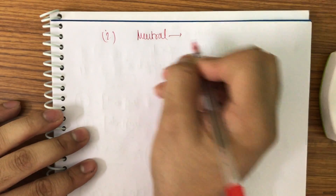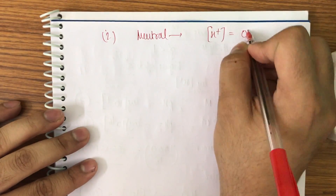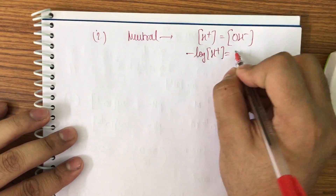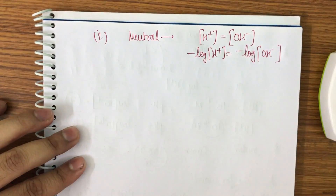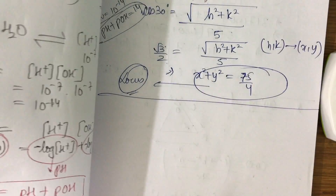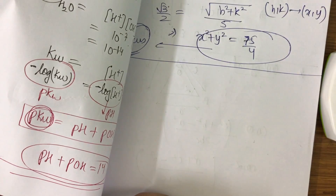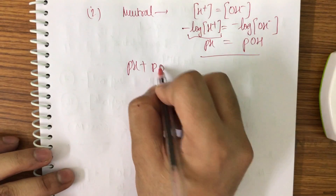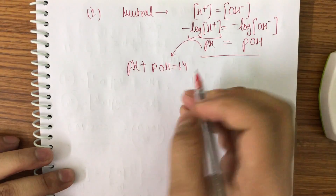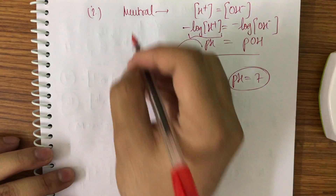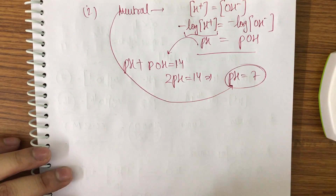For a neutral solution, the concentration of H⁺ must equal the concentration of OH⁻. Taking minus log on both sides, pH equals pOH. Since pH plus pOH equals 14, substituting gives 2·pH equals 14, so pH equals 7. Thus, in a neutral solution, pH equals 7 — as we have all learned.